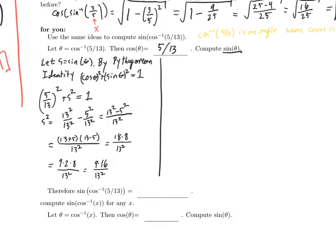So that means that s squared is equal to 9 times 16 over 13 squared. So s is equal to plus or minus the square root of 9 times 16 over 13 squared. Well, now we're cooking!